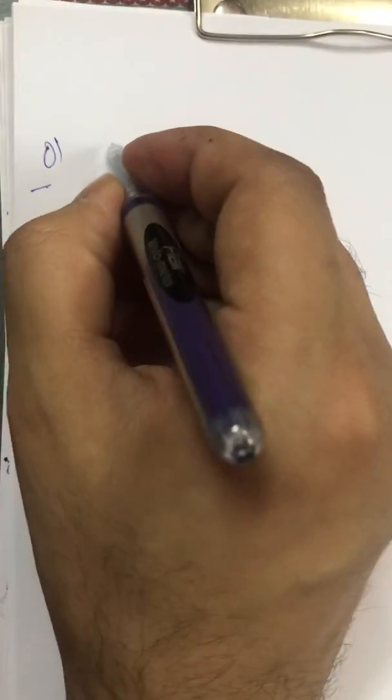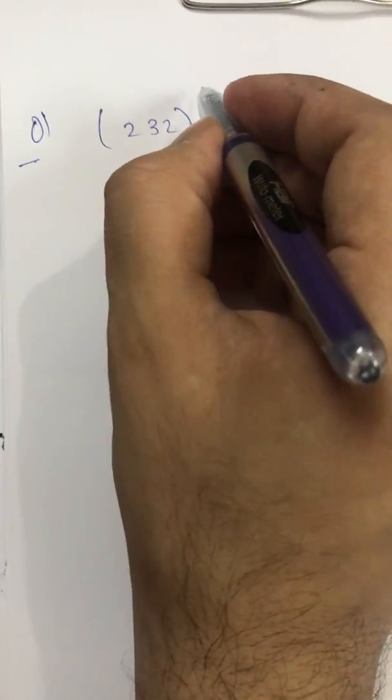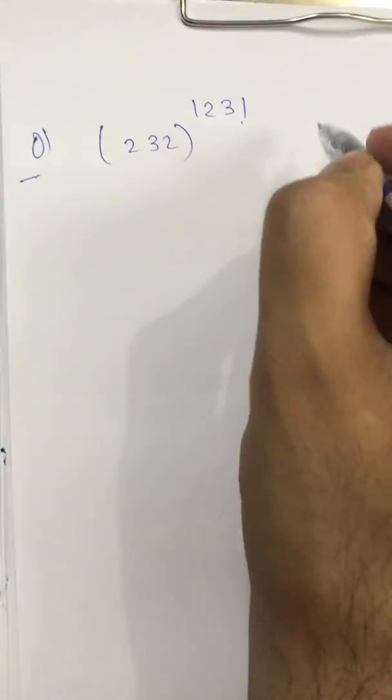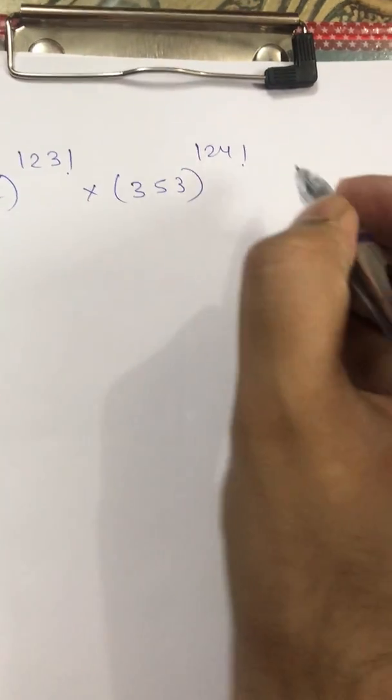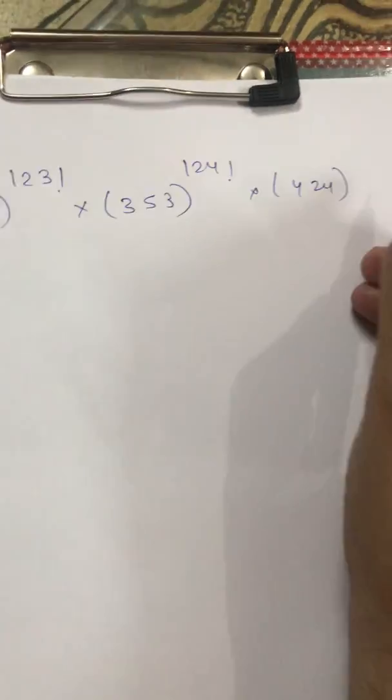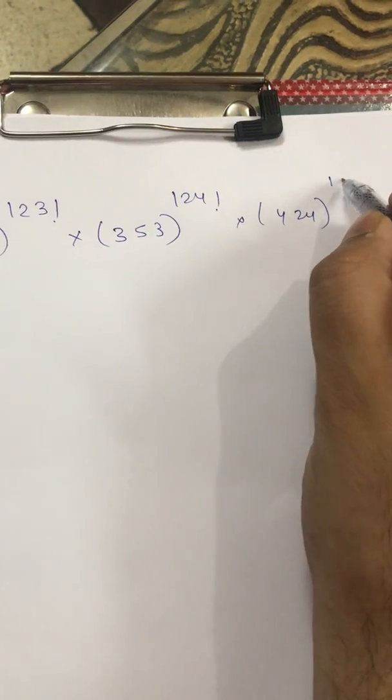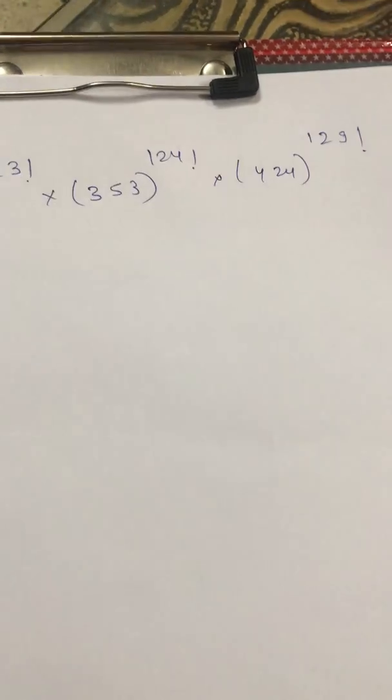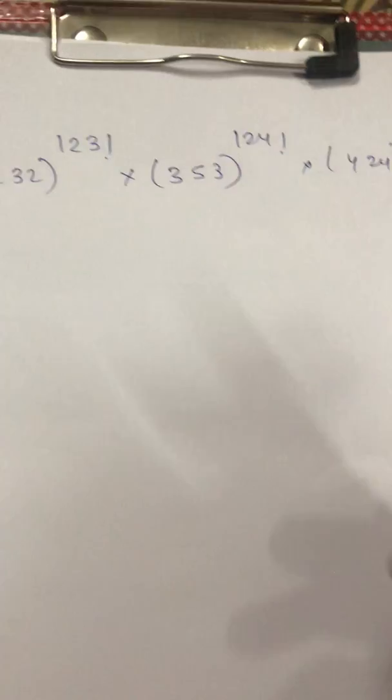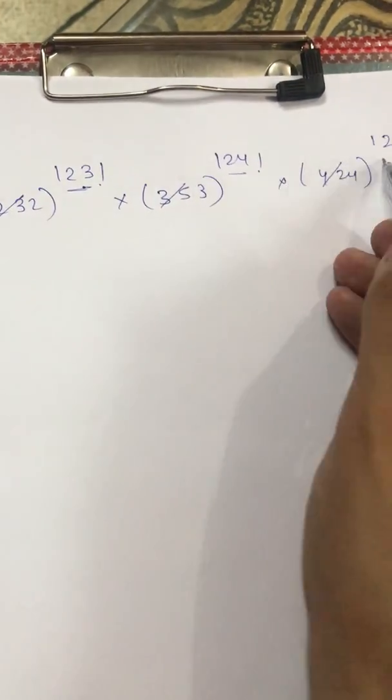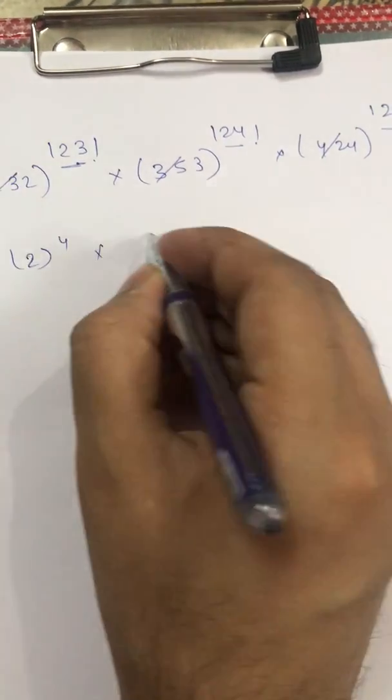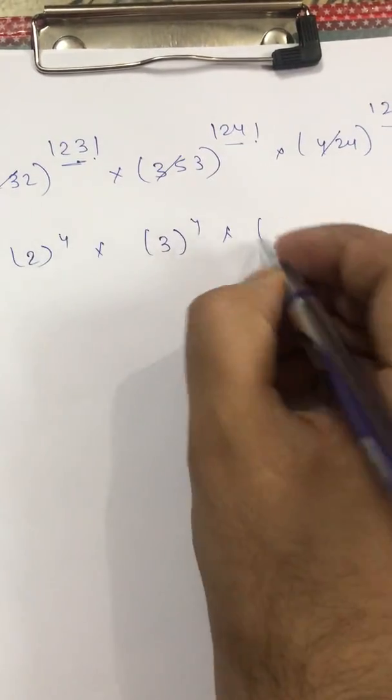I will take one more example with you. Suppose they are asking me find the unit digit of 23 raised to the power 42 factorial plus 35 raised to the power 42 factorial plus 42 raised to the power 42 factorial. As we are just dealing with the unit digit leave this 23, 35 and 42. Factorial is there I will directly take the power as 4 so 2 raised to the power 4 multiply by 3 raised to the power 4 multiply by 4 raised to the power 4.